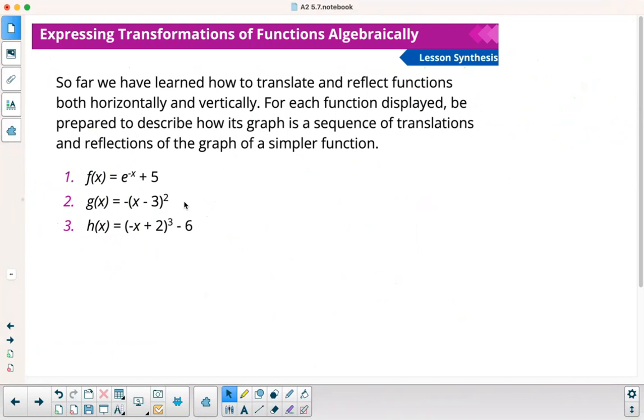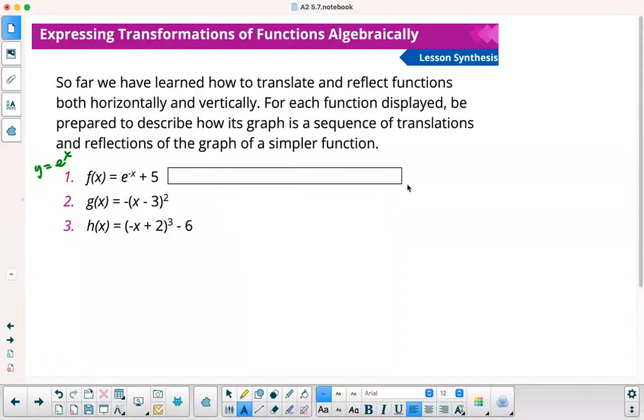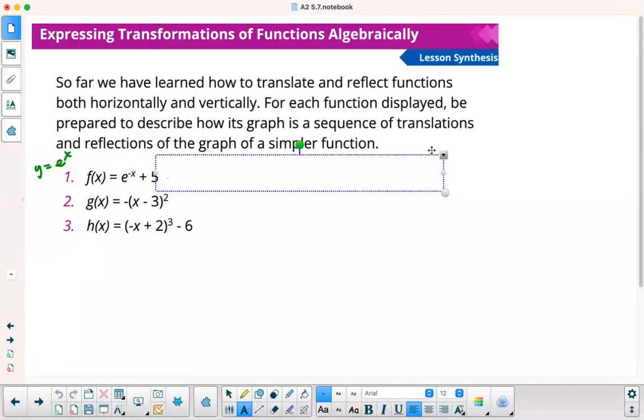Our lesson synthesis. So far, we learned how to translate and reflect functions, both horizontally and vertically. For each function displayed, describe how the graph is a sequence of translations and reflections of the simpler function. The simpler function here would just be e to the x. If I change the sign of x, and again, you can go back and look at that first slide, change the sign of x, that's going to be reflection across y-axis. And then the plus 5 means it's going to translate up 5.